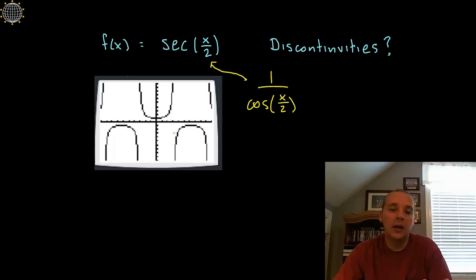So what we can actually do is over on some scratch paper, we can write cos(x/2) and basically ask the question: where is this equal to zero? Because if we can find those places, that's going to be where the discontinuities are.